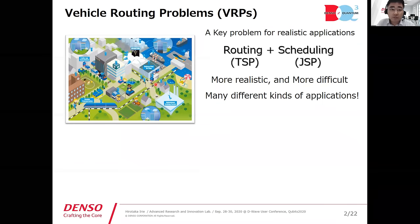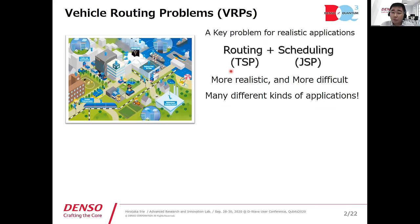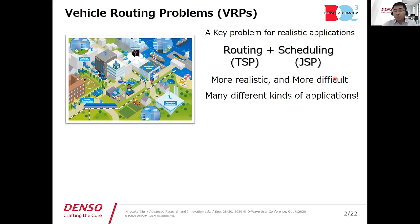Why do we consider the vehicle routing problem? It's because it's a key problem for realistic applications. It is a combination of the routing problem and the scheduling problem, so both are very important. We can combine them to create a more realistic and more difficult problem. Vehicle routing problem can represent many different kinds of applications, so that's why we consider VRP.